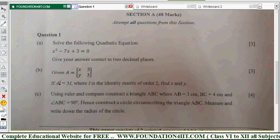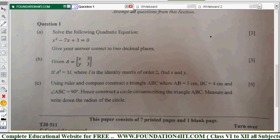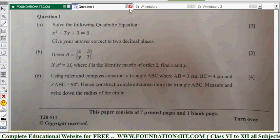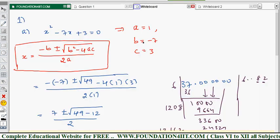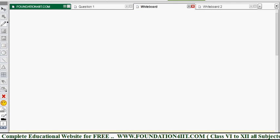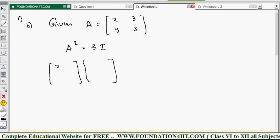See the next one. Given x, 3, y, 3 matrix, if a square equals 3i, i is identity matrix of order 2 by 2. Find the x and y. This is a square, so a into a matrix we will take. This matrix we want to multiply again. That is x, 3, and y, 3 is given. And also they said a square equals 3i, right? A square, that means a matrix you should multiply again, the matrix here.